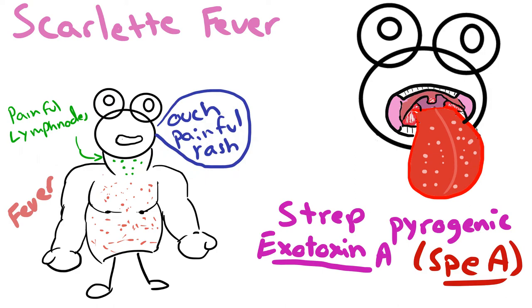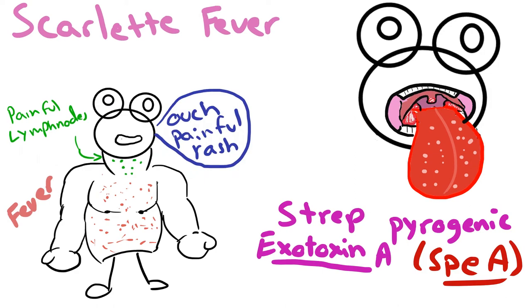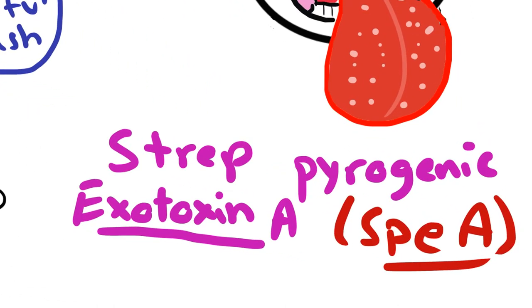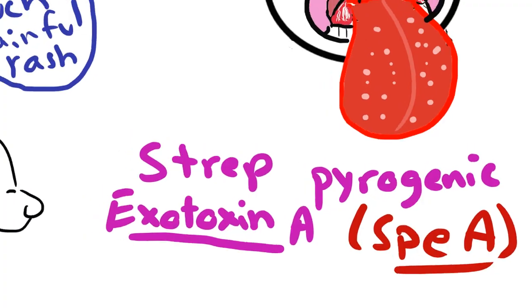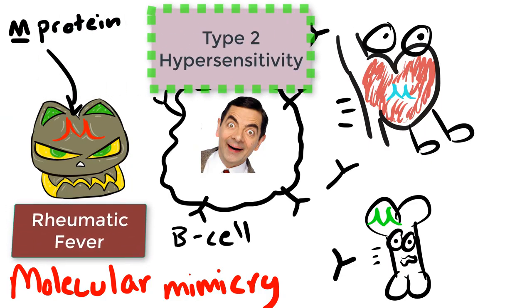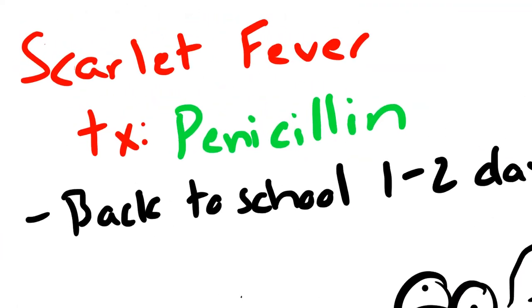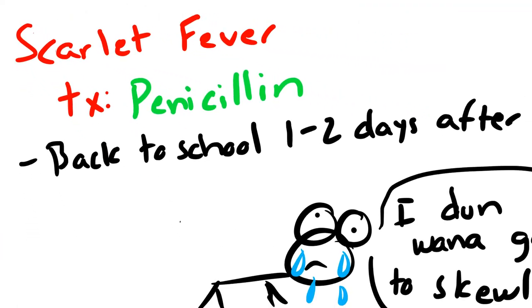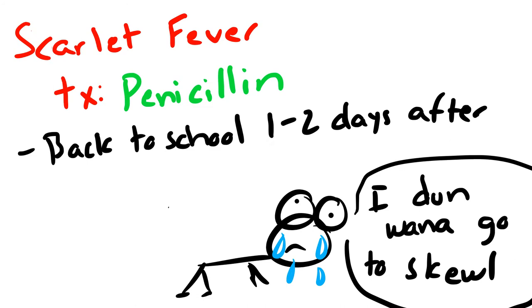The main difference between scarlet fever and rheumatic fever is that scarlet fever is caused by streptococcal pyrogenic exotoxin A (SPEA), so it's toxin-mediated, versus rheumatic fever which is from molecular mimicry and a type 2 hypersensitivity reaction. We treat scarlet fever with penicillin, and importantly, kids can return to school within one to two days after starting antibiotic therapy.